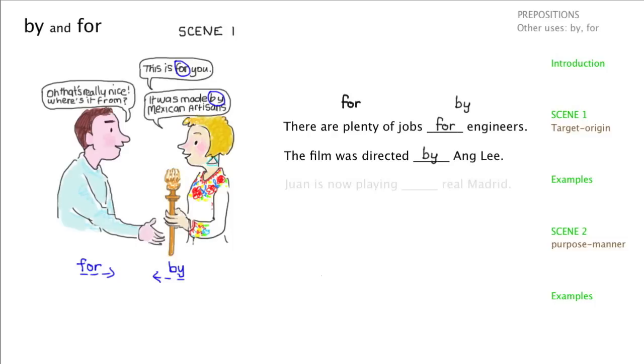And here's the next one: Juan is now playing Real Madrid. Real Madrid is the name of a football team, as many of you will know. Juan is a footballer. So is this a for or a by? Well, he's in the team, so I think we can say he's playing for Real Madrid. So I'll drag the for down and put it there.